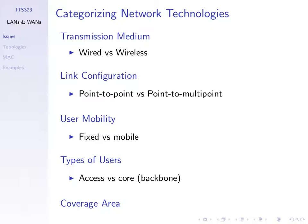Based upon link configuration, some networks use point-to-point links — two devices connected by a link just for themselves. Point-to-multipoint means multiple devices share that one link, like in wireless communications. Some networks support fixed users, whereas others support mobile users. Wi-Fi allows you to move and still access the network, whereas a wired LAN makes you a fixed user — if I plug the LAN cable into my laptop, I cannot go far.